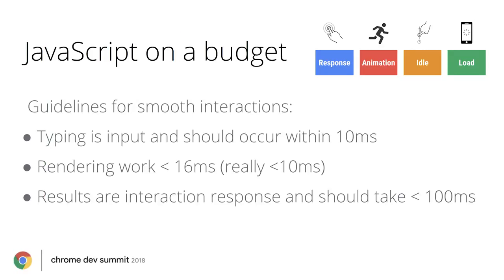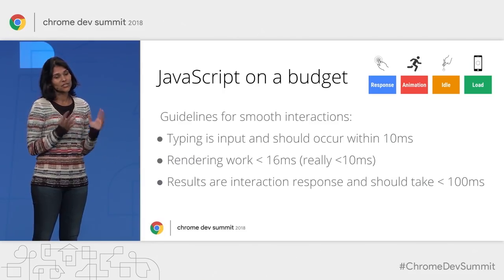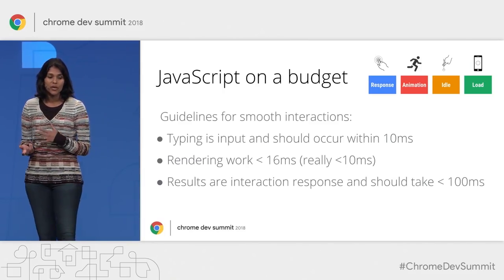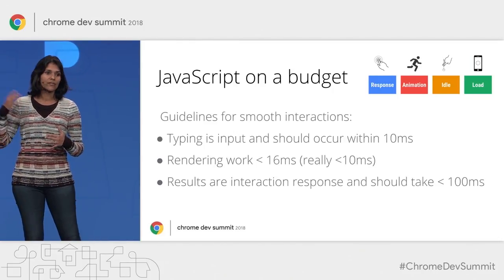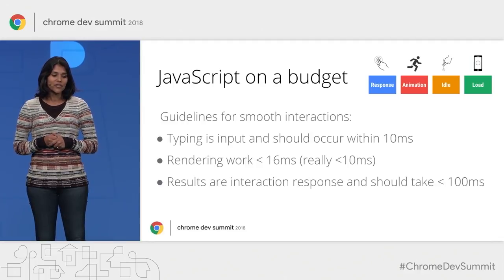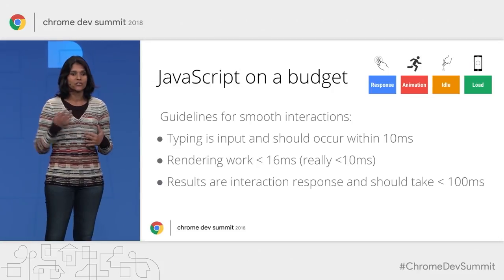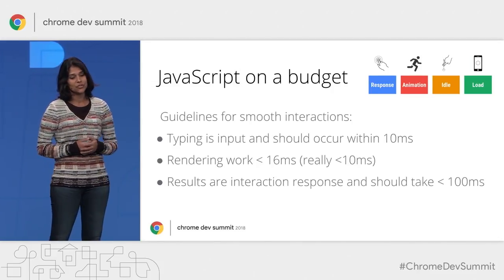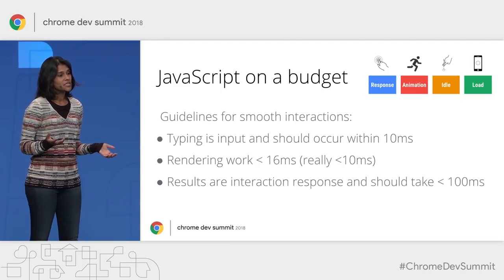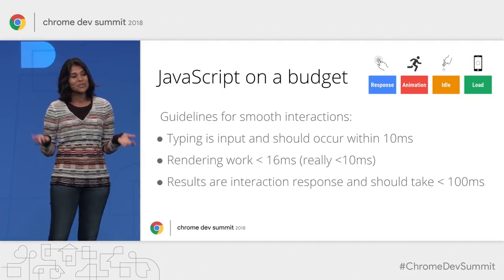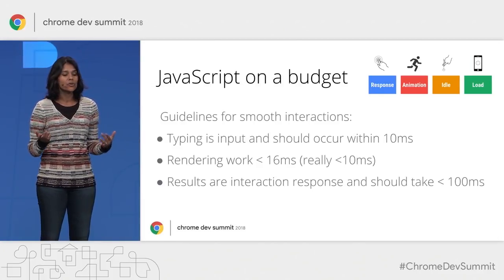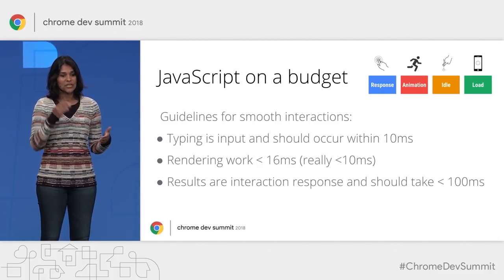A problem with our Search As You Type example app is that there are a lot of different types of work happening. All of these different types of work have what we are calling great deadlines. For example, the user is typing in a search box and their input has to be responsive. There are ongoing animations on the page that have to render consistently and smoothly. And then there is the heavy lifting of fetching search results, post-processing, preparing, and rendering those results in time so they are relevant to the user's query. The difficulty is that it is hard for apps to balance these competing needs and reason about all these different deadlines while keeping everything meeting these timelines.